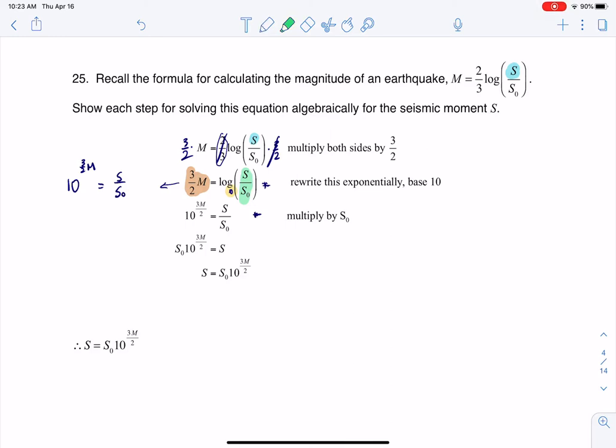It's not too bad, because again, if I go back to eye on the prize, I'm trying to solve for S. The only thing I need to do now is multiply both sides by S sub zero to get rid of the fraction, and there we go.